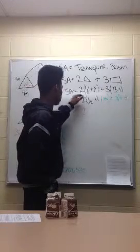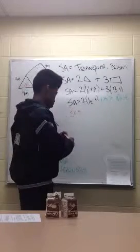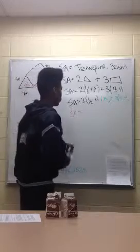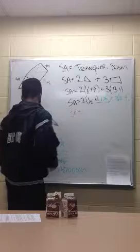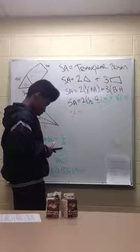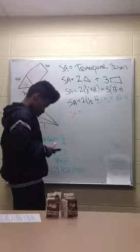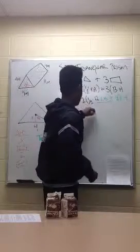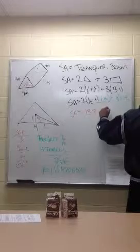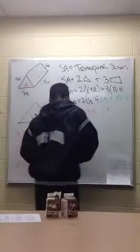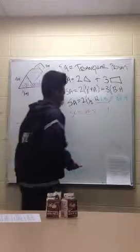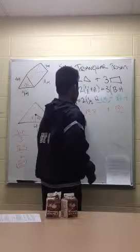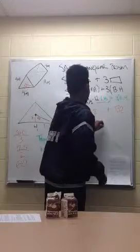Now we can start simplifying the problem. 2 times half is 1. So all we have to worry about is the 12 times the 1.15. That would be 13.8 for the triangles. And then add that to the 3 times 11 times 4, so you get 132. So now just add the surface area. That would be 145.8 meters squared.